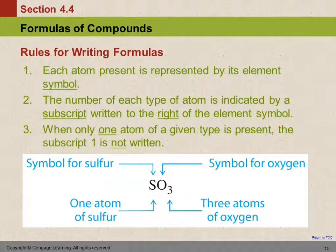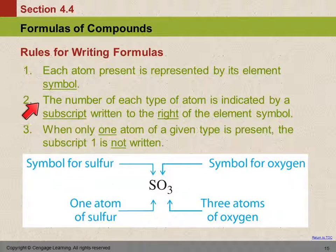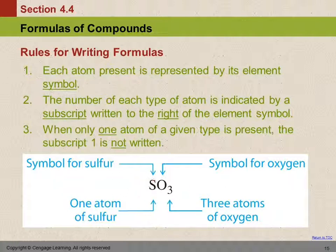When we write chemical formulas, we represent the atoms using the element symbols — the ones on the periodic table. To indicate how many atoms of each element, we use a subscript. A subscript is below the regular letters, just like a submarine goes below the water. And the subscript is put to the right of the element it's referring to.